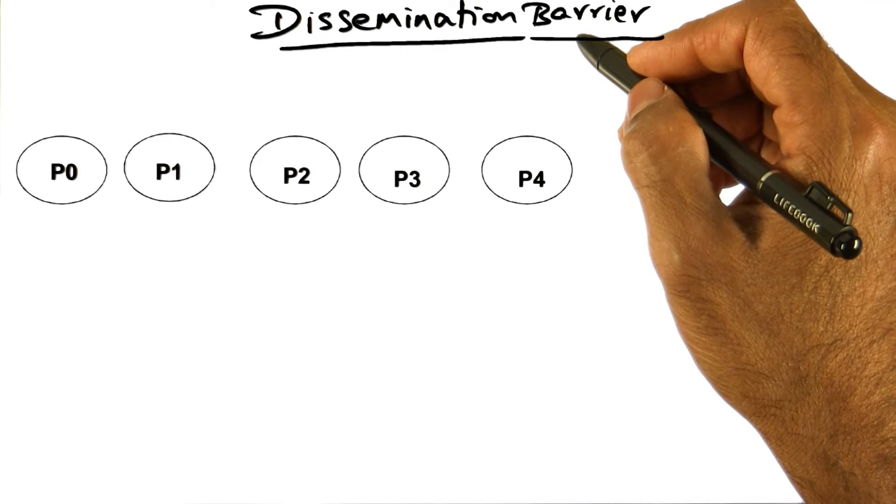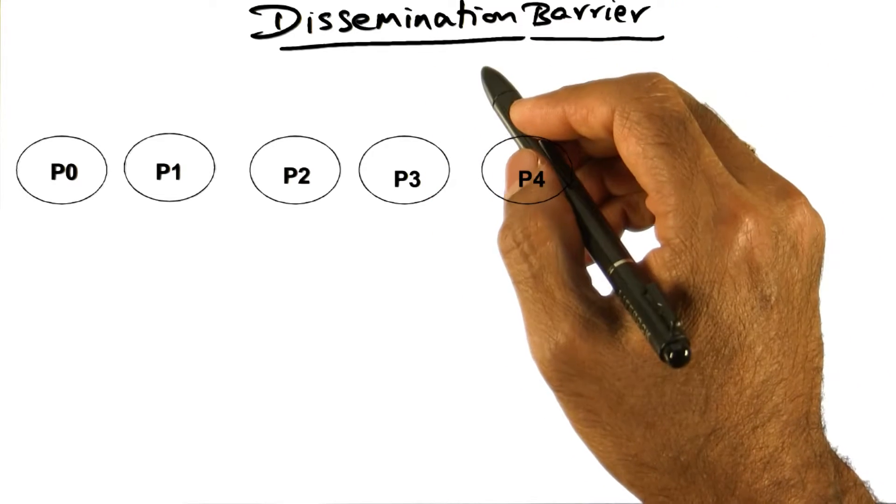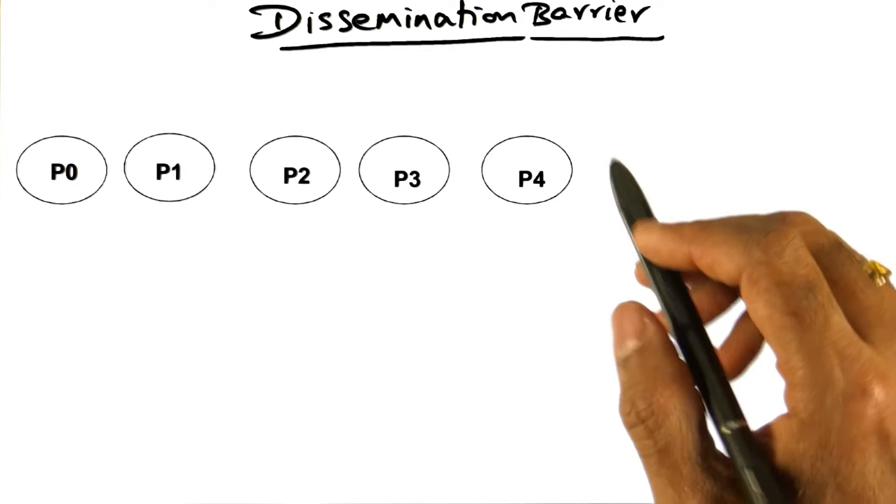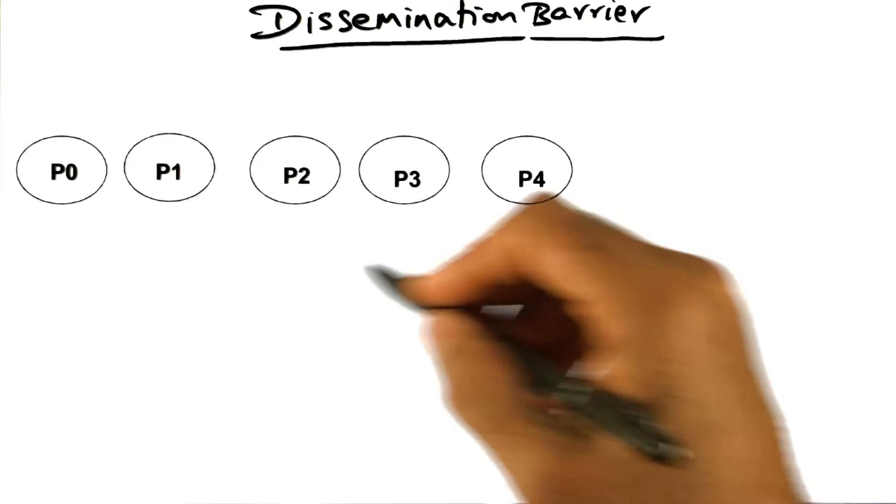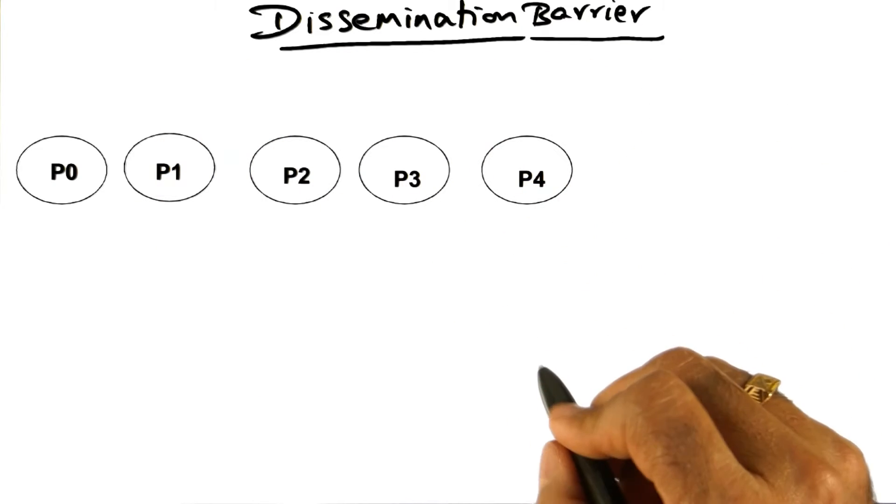The last barrier algorithm I'm going to describe to you is called a dissemination barrier. It works by information diffusion in an ordered manner among the set of participating processes.